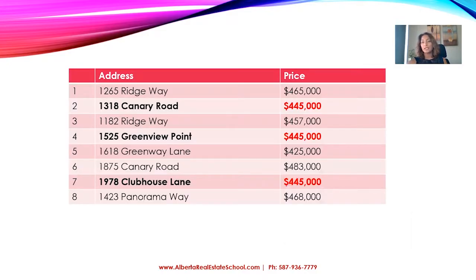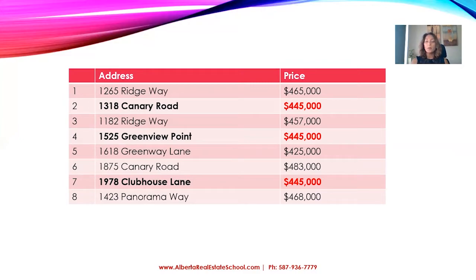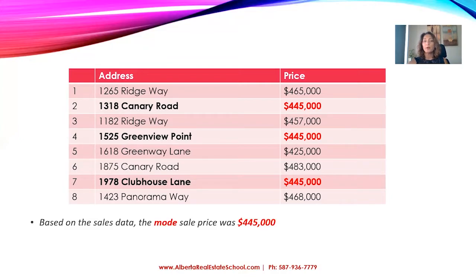So how would this look? Let's say she compiled a list and there were eight sales. Out of the eight sales, we see $445,000 — this is the price that many of the houses sold at, the number that is repeated most often. Therefore, this is the mode. When the real estate board puts out data and says the mode price is $445,000, this is what they're talking about.